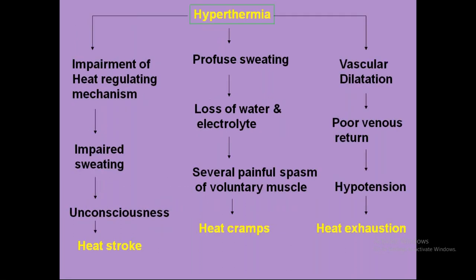Next, coming to hyperthermia. We commonly read in newspapers about people dying from heat stroke or sunstroke. Sunstroke or heat stroke is due to hyperthermia, mostly in extreme hot environments, and mostly children and elderly populations are affected. There are three stages in heat stroke: the first stage is heat exhaustion, the second is heat cramps, and the third is heat stroke.